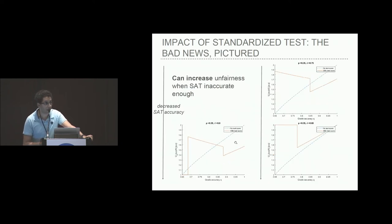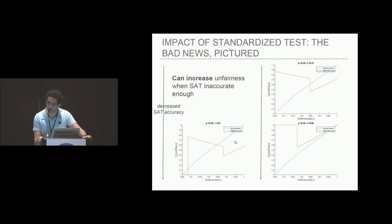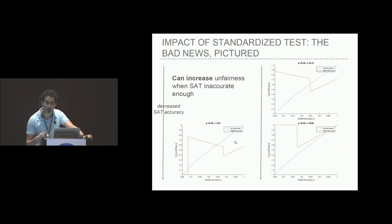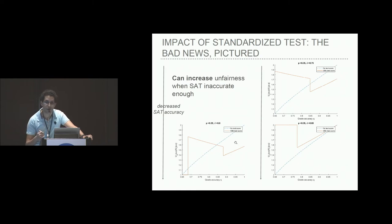What's surprising and concerning, however, is that if the SAT score becomes inaccurate enough, it can have the opposite effect of actually increasing the disparities between the revealing and the strategic school due to signaling. As the SAT accuracy becomes worse and worse, the orange curve overtakes more of the blue curve, meaning that for more values of the grade accuracy parameter, the presence of an SAT score actually increases the unfairness between a revealing and a strategic school.